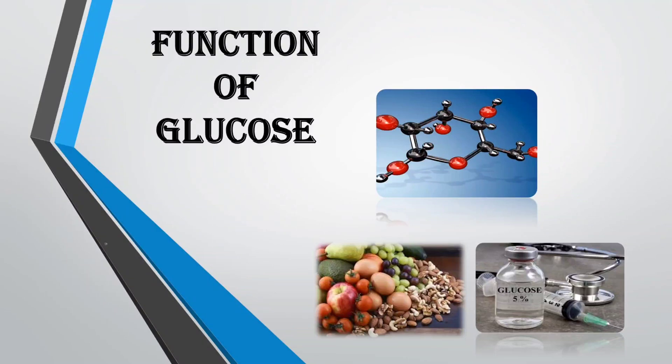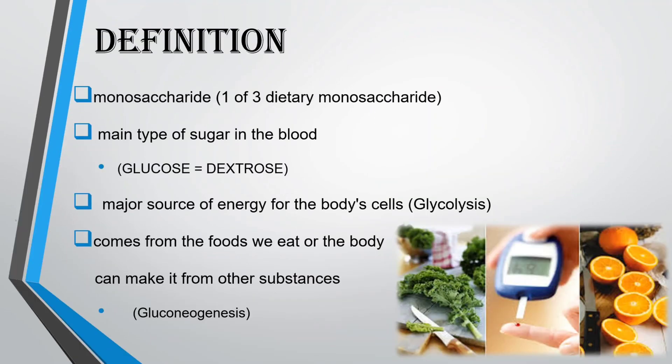Function of glucose. Definition: Glucose is a monosaccharide, one of three dietary monosaccharides, and the main type of sugar in the blood. Glucose equals dextrose.